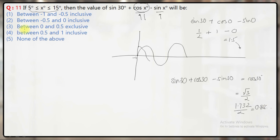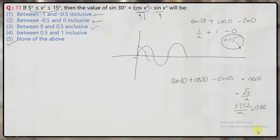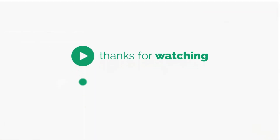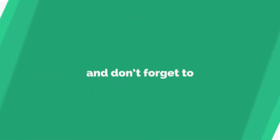That means this could be 0.866. If you look at the range options: between minus 1 and 0.5 — this value does not exist. At 0° or 5° the value will be slightly less than 1.5, so this range is completely negative. The option 0 to minus 0.5 has no positive values. The third option says 0 to 0.5, but my answer would be slightly less than 1.5. The upper limit will be slightly less than 1.5, so none of those options satisfy — that's why my answer is the fifth option.